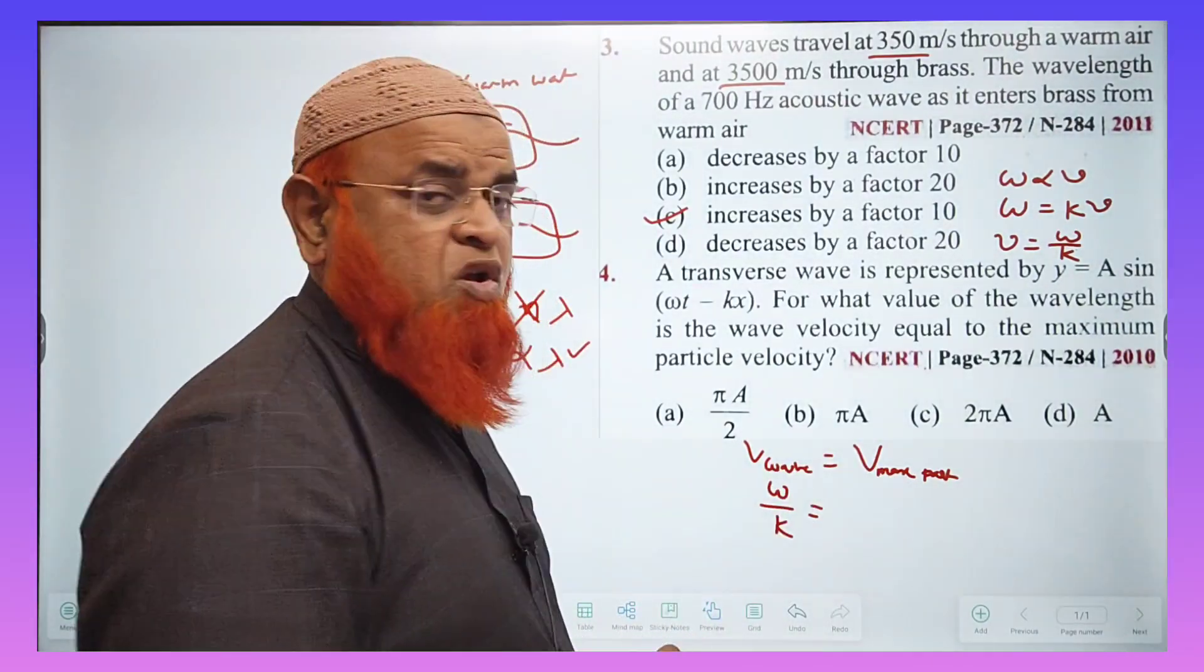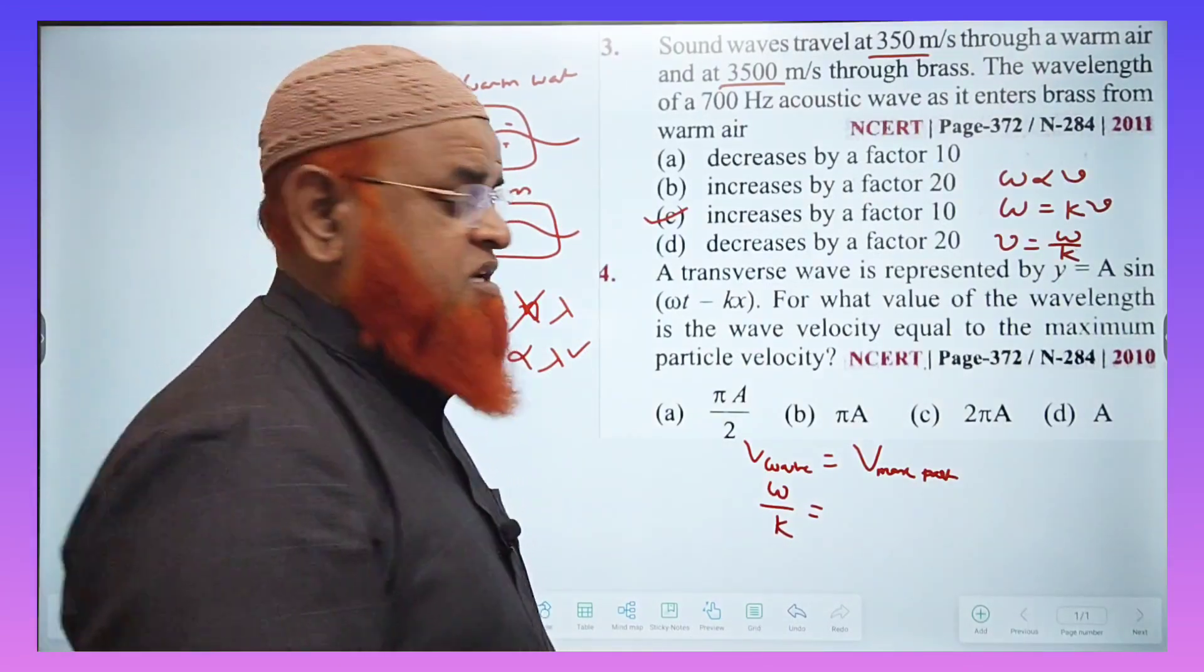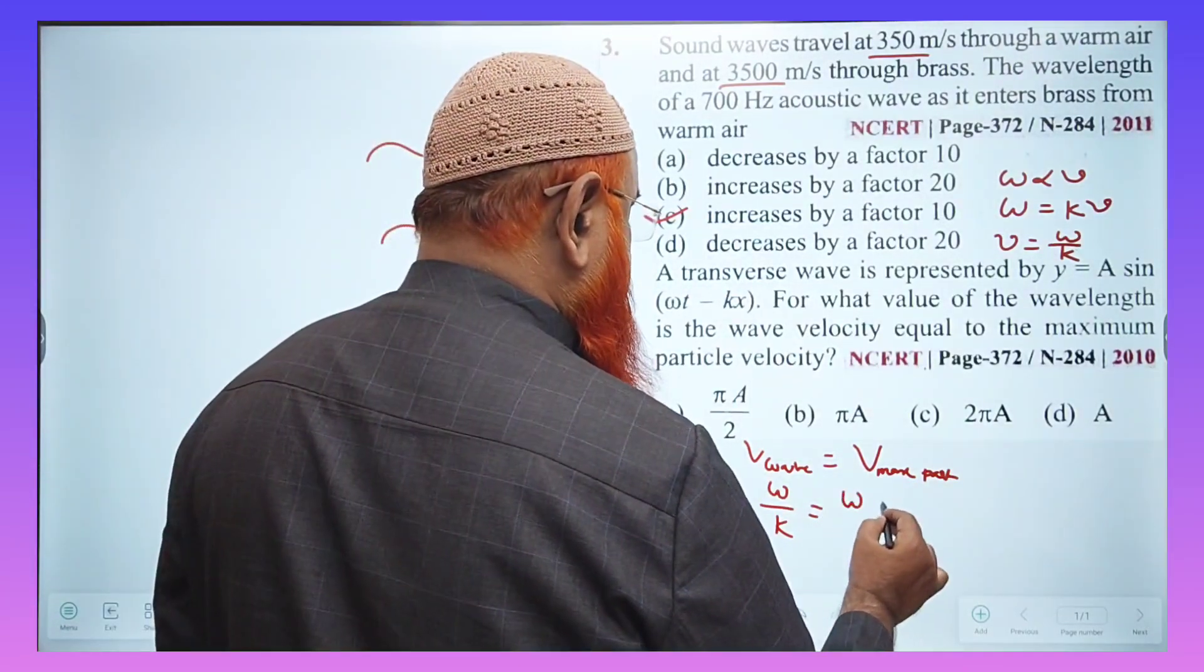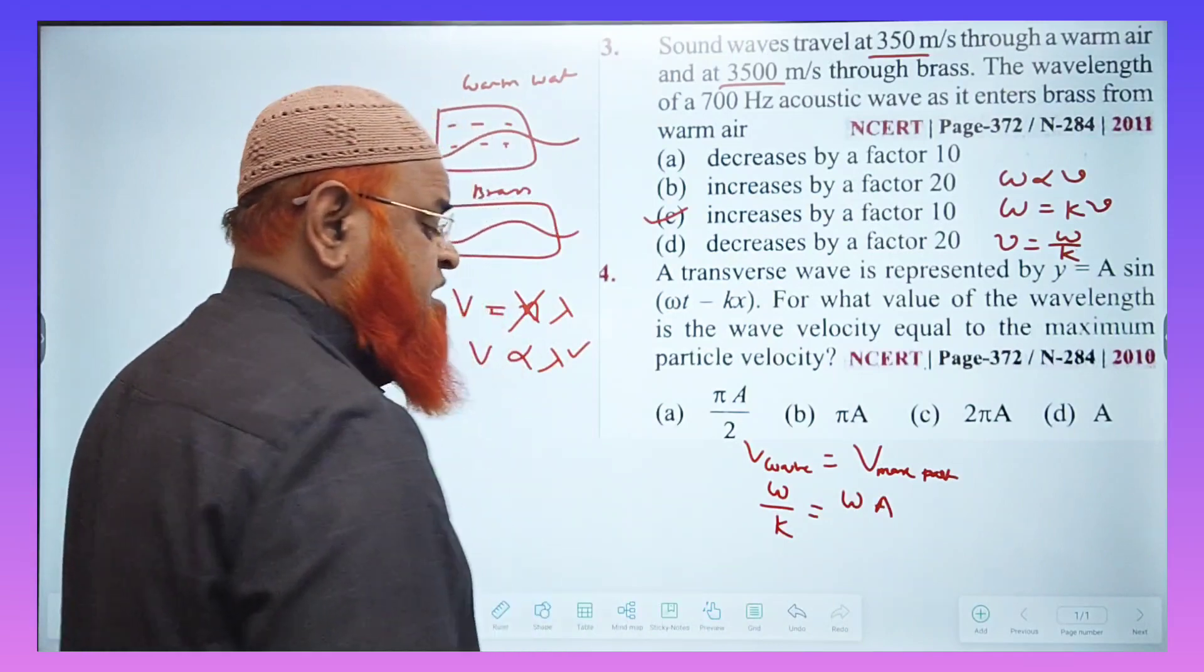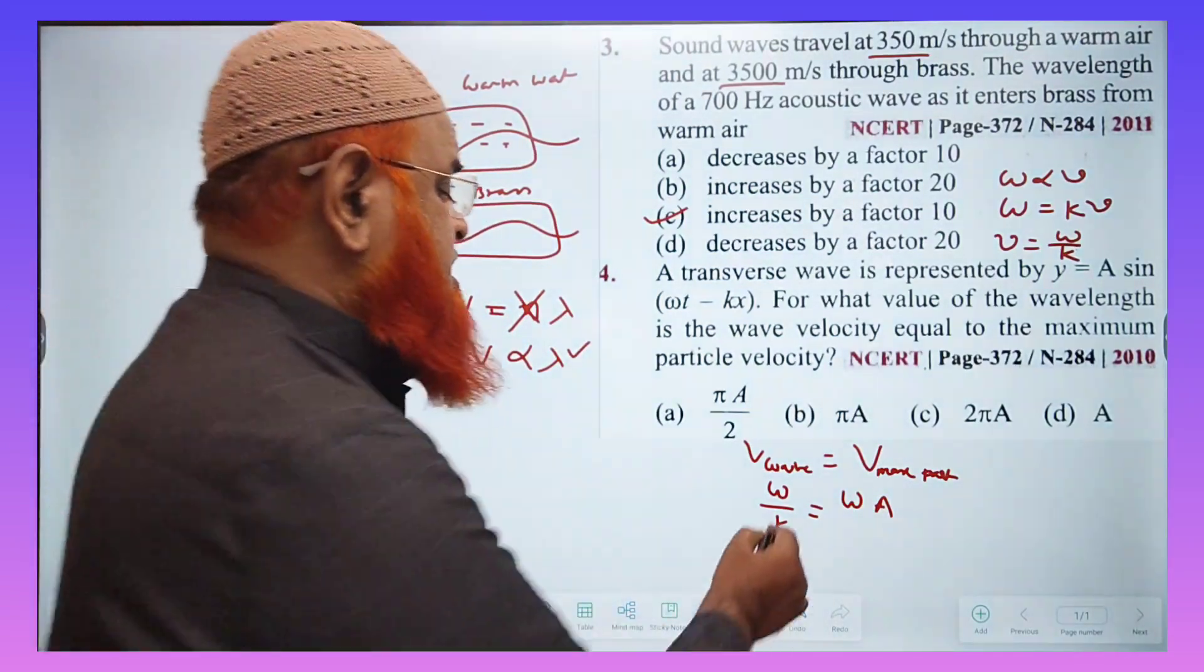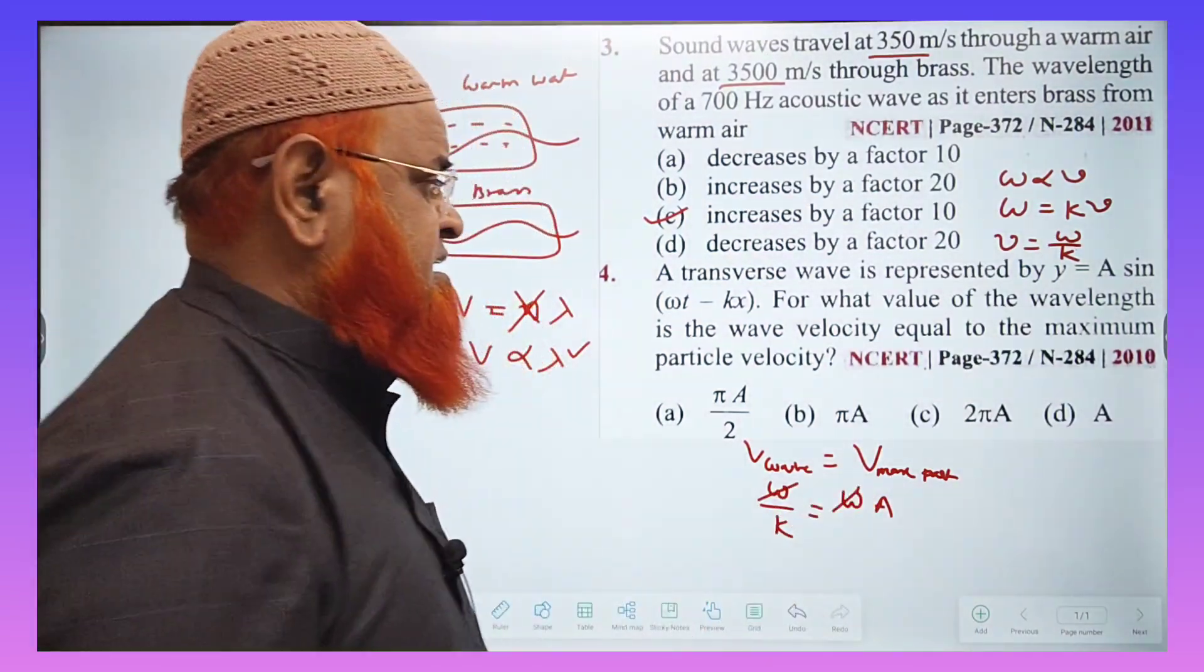This v is said to be the velocity of a wave. So we can write v is equal to omega by k. And what is maximum particle velocity? It is nothing but omega into A. So here, omega gets cancelled.